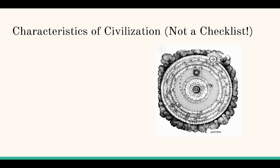Don't use the characteristics as a strict checklist. One of the things we'll look at as we go through the year is what does the variation look like in a given place — what does civilization look like here versus there — making comparisons so we can understand human experiences as a whole, knowing it won't be the same in every region of the world.